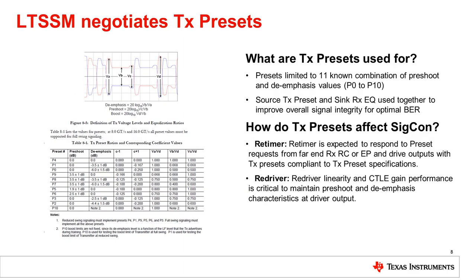Earlier, we discussed signal conditioning presets negotiated during LTSSM states. There are 11 presets and each PCIe device must conform to each of the settings. Compliance testing checks adhere to these settings. SourceDX presets, SyncRxEq, and SyncDfe all together are used to improve the overall signal integrity for optimal BER, or bit error rate. A retimer through protocol negotiation provides appropriate presets such that the SyncRx can tune its CTLE and DFE to achieve optimum bit error rate.